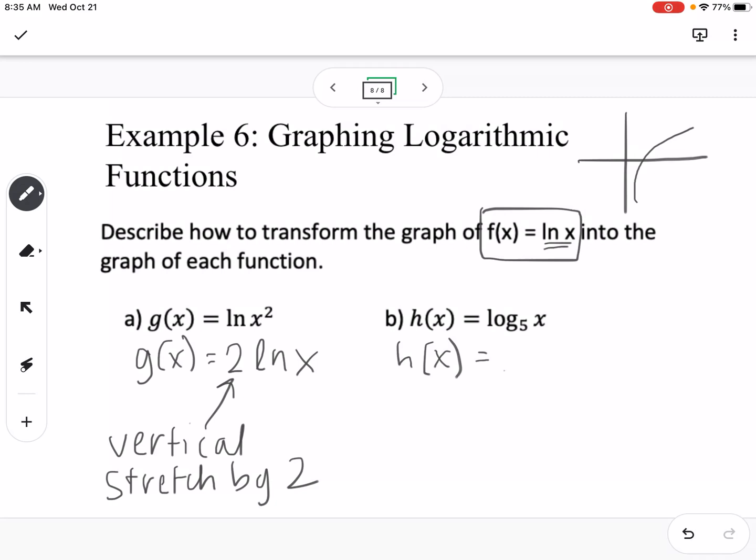So this would be natural log of x over natural log of 5. Now, if I rewrite that slightly, this would be 1 over natural log of 5 times natural log of x. So you can see this is also going to either be a vertical stretch or shrink. You can evaluate 1 over natural log of 5 in the calculator, and it's about 0.62. So this would be a vertical shrink or compression by about 0.62, approximately.